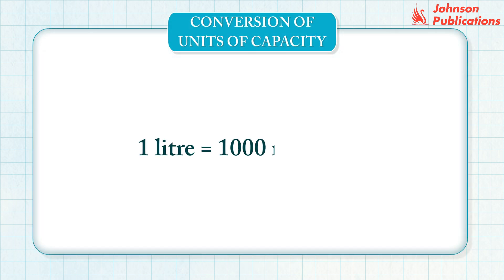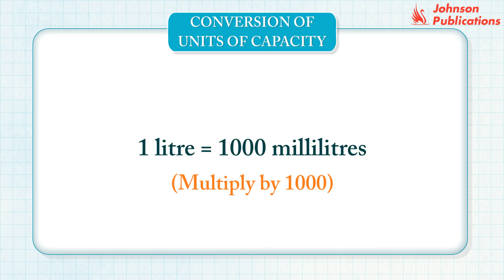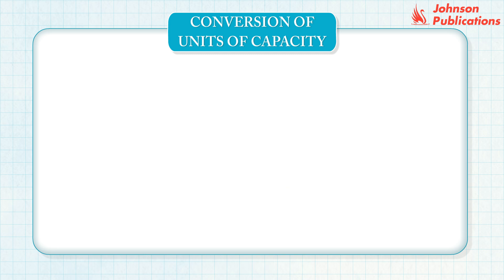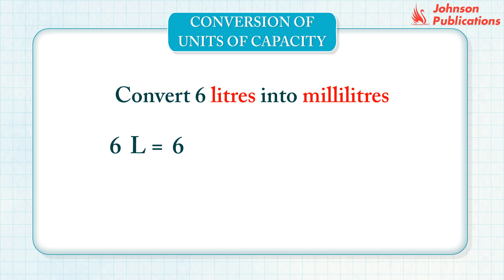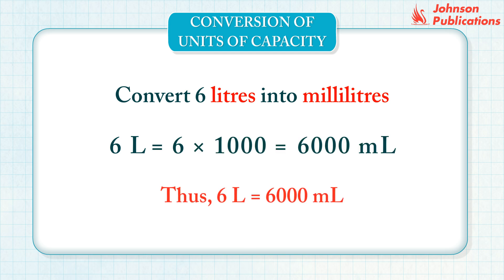We know that 1 liter equals 1,000 milliliters. To convert liters into milliliters, multiply the liters by 1,000. Let us convert 6 liters into milliliters. Multiply 6 liters by 1,000. Thus, 6 liters equals 6,000 milliliters.